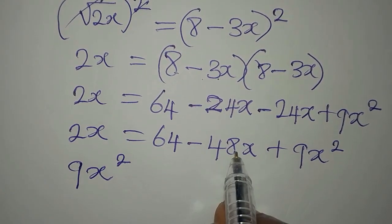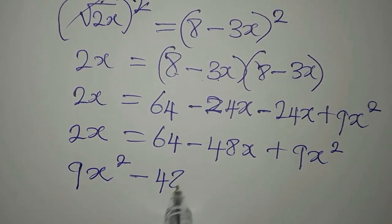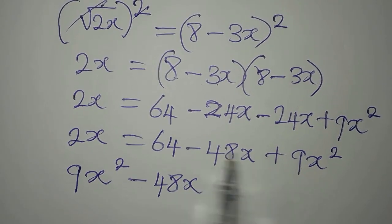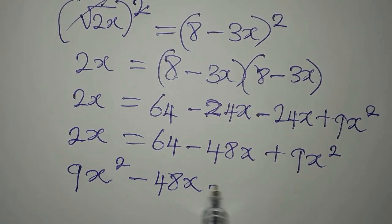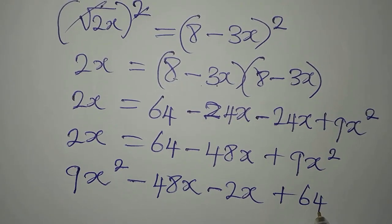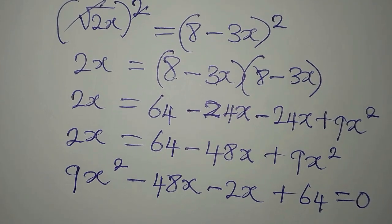Then we have negative 48x. If this 2x goes to meet with the rest, it will turn to negative 2x, giving us negative 50x. Then 64, that is plus 64.